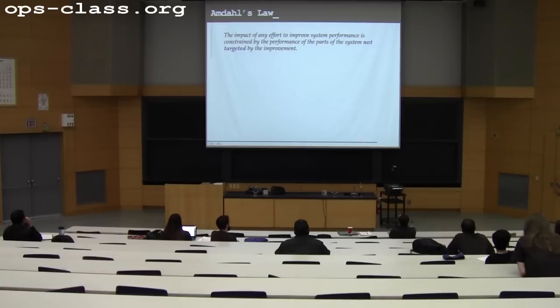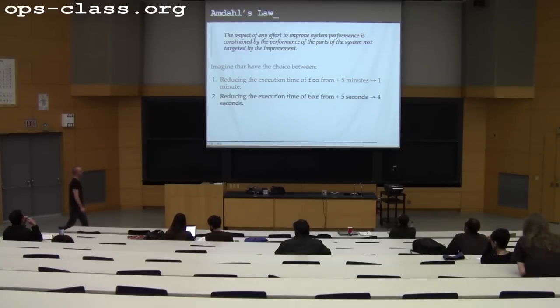But let's talk about significance. And this comes down to something that I really wish, if there's anything that I wish that most people in the world knew about the world, other than not to use means and to use medians, this would be it. It would be Amdahl's Law. So colloquially, Amdahl's Law says, the impact of any effort to improve system performance is constrained by the performance of the parts of the system not targeted by the improvement. How many people have heard some formulation of this before? All the graduate students. So now, imagine we have the choice between reducing the execution of foo from 5 minutes to 1 minute, or reducing the execution time of bar from 5 seconds to 4 seconds. Because remember, this is going to matter.